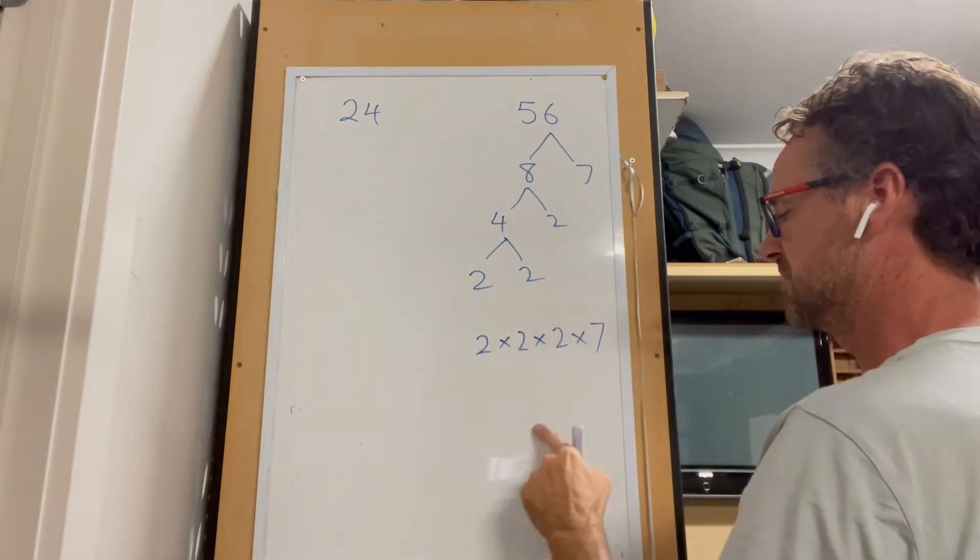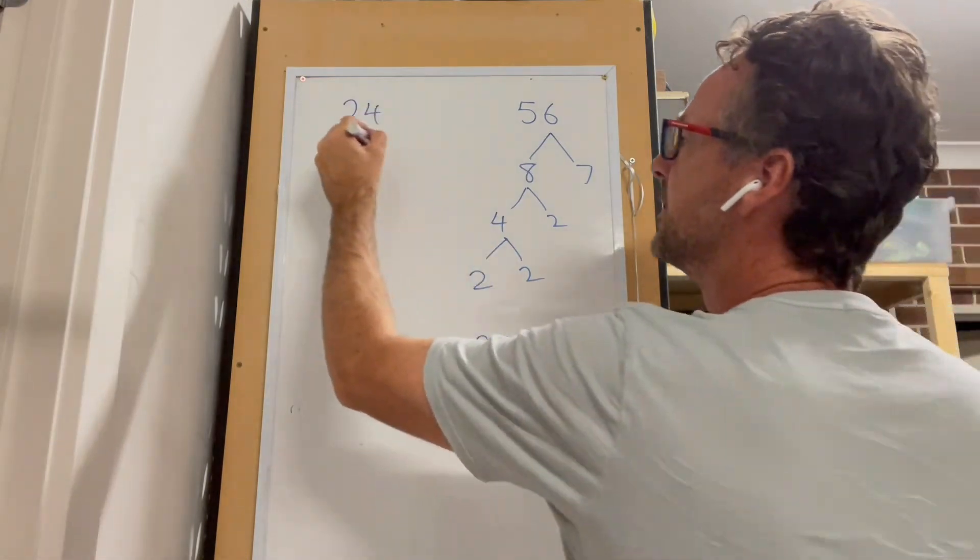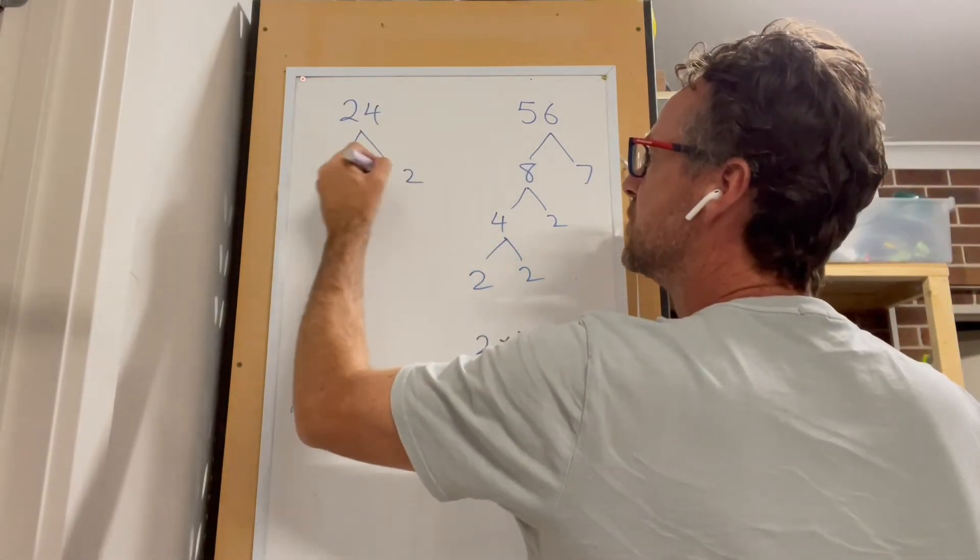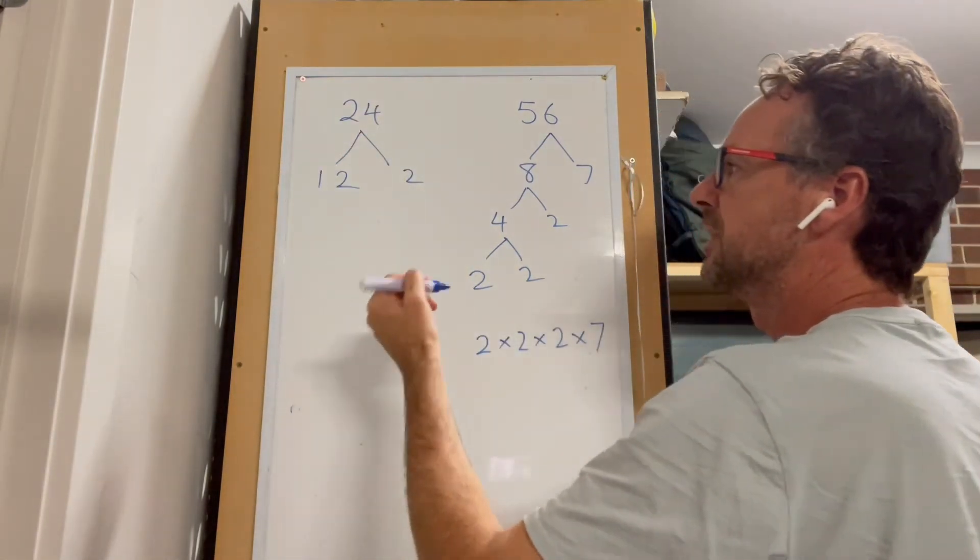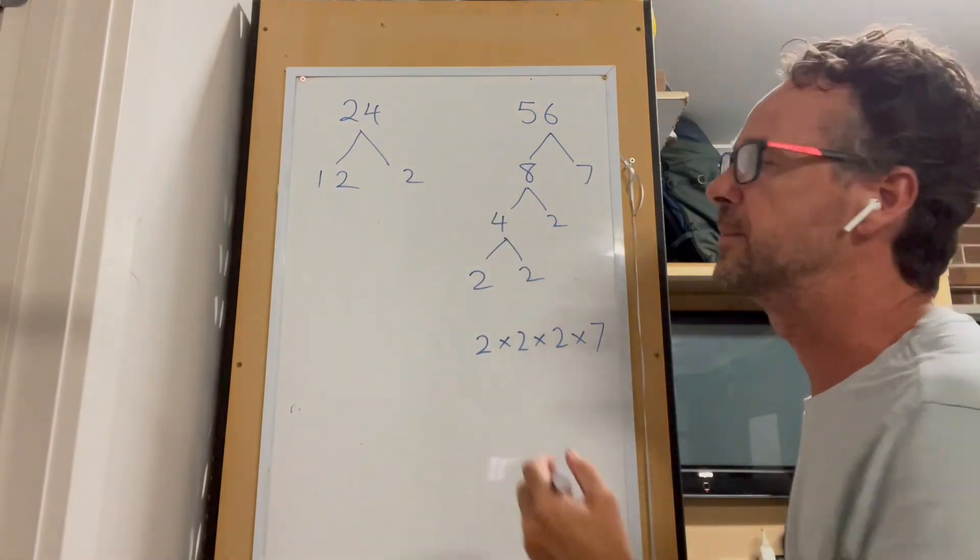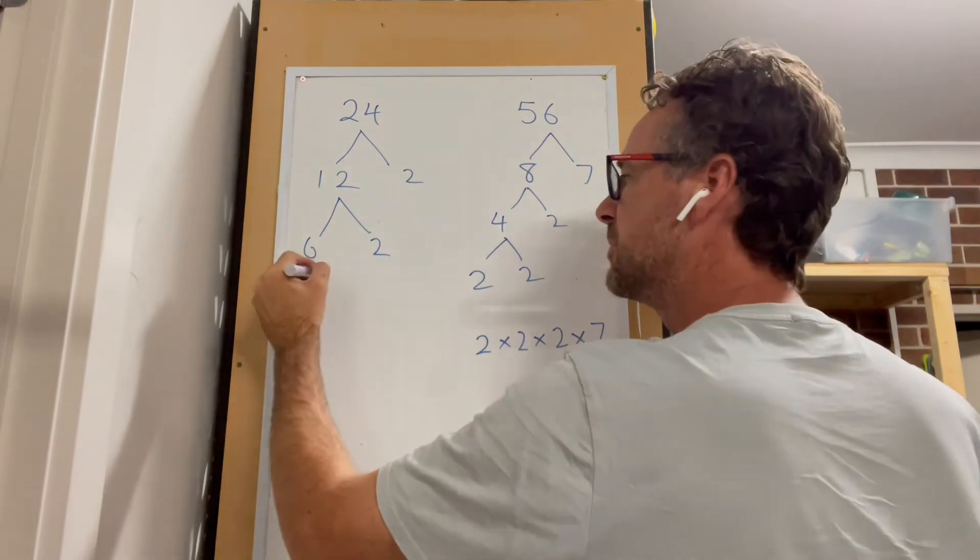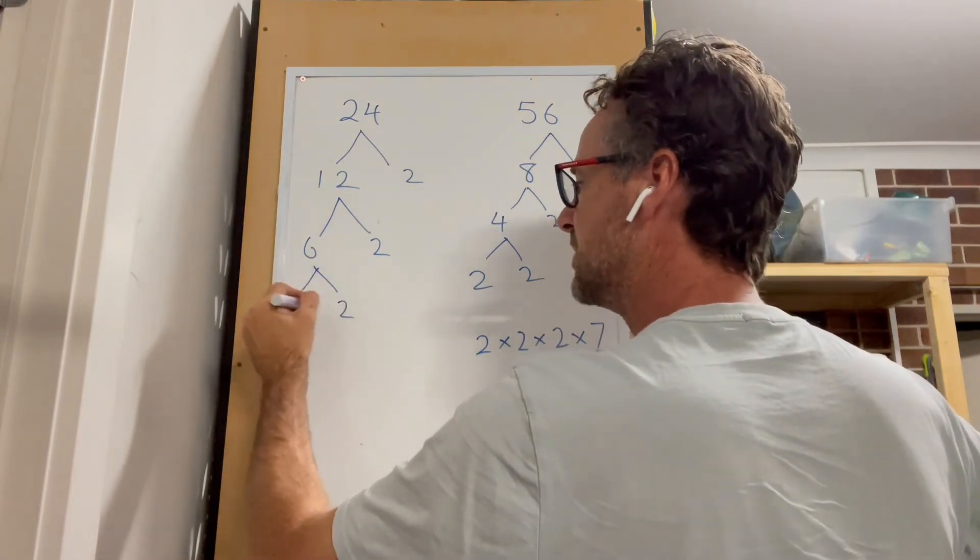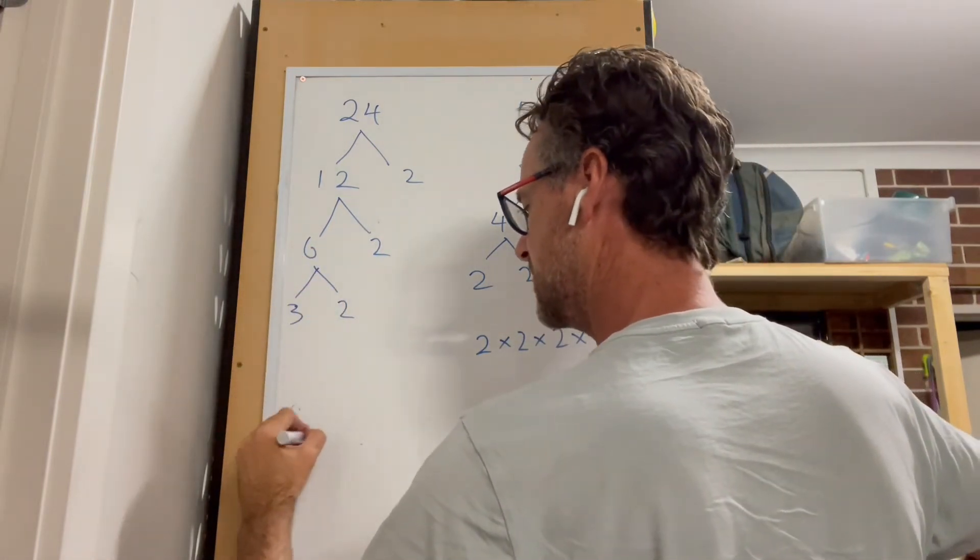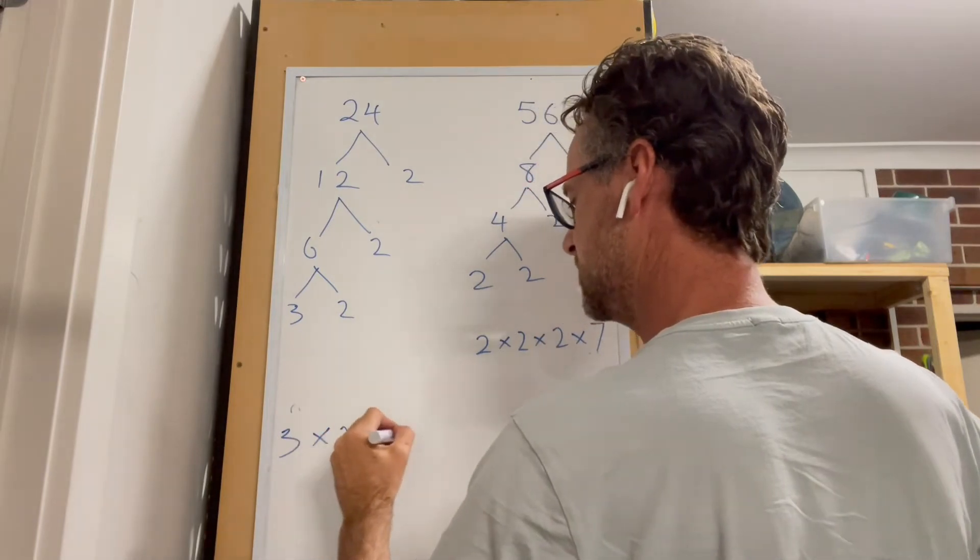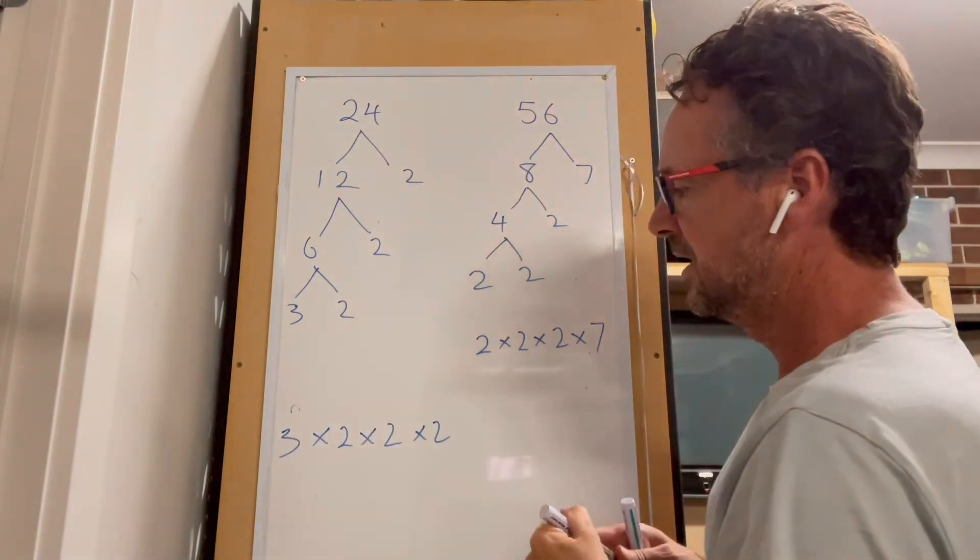Over here we can do 24: 2 and 12. Again, I've chosen 2 because it's a prime number already, and then I can choose 6 and 2 for another prime number, and then 3 and 2. So we have 3 times 2 times 2 times 2.